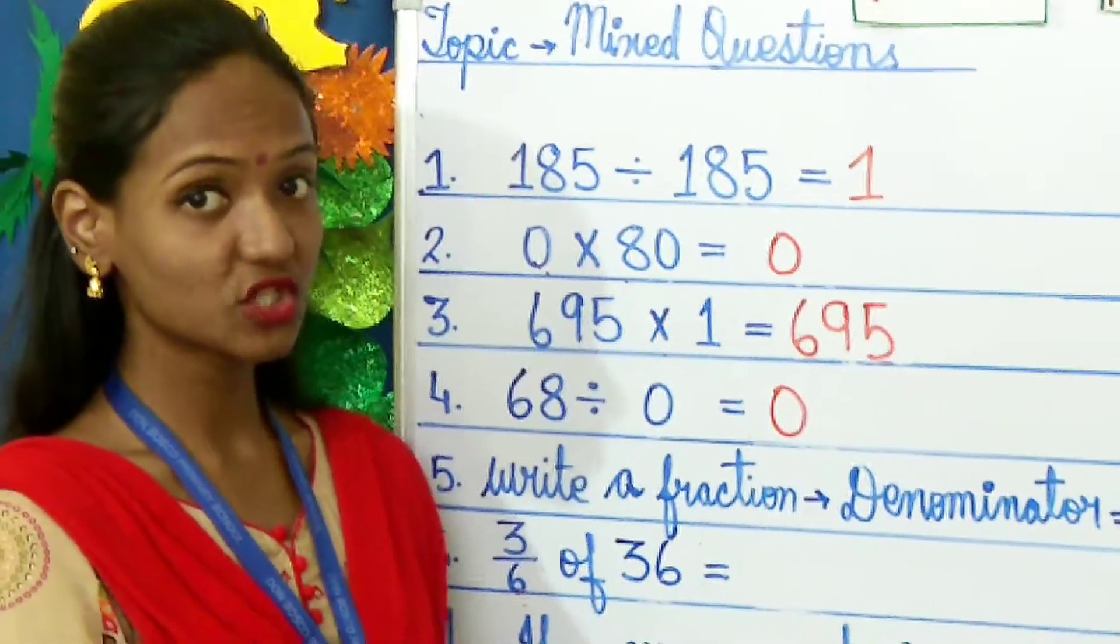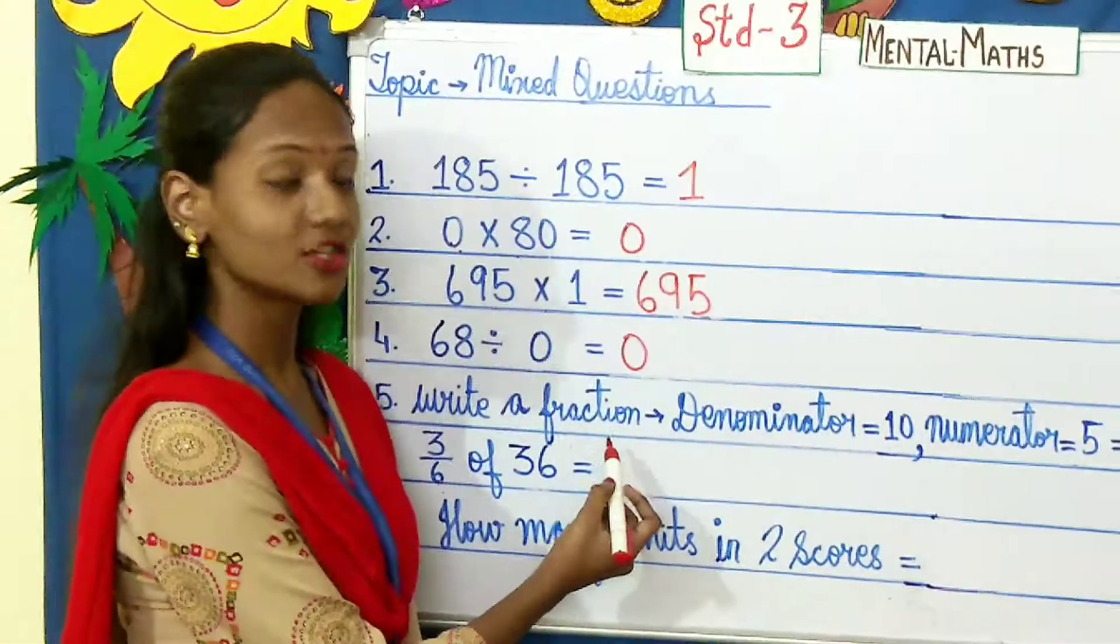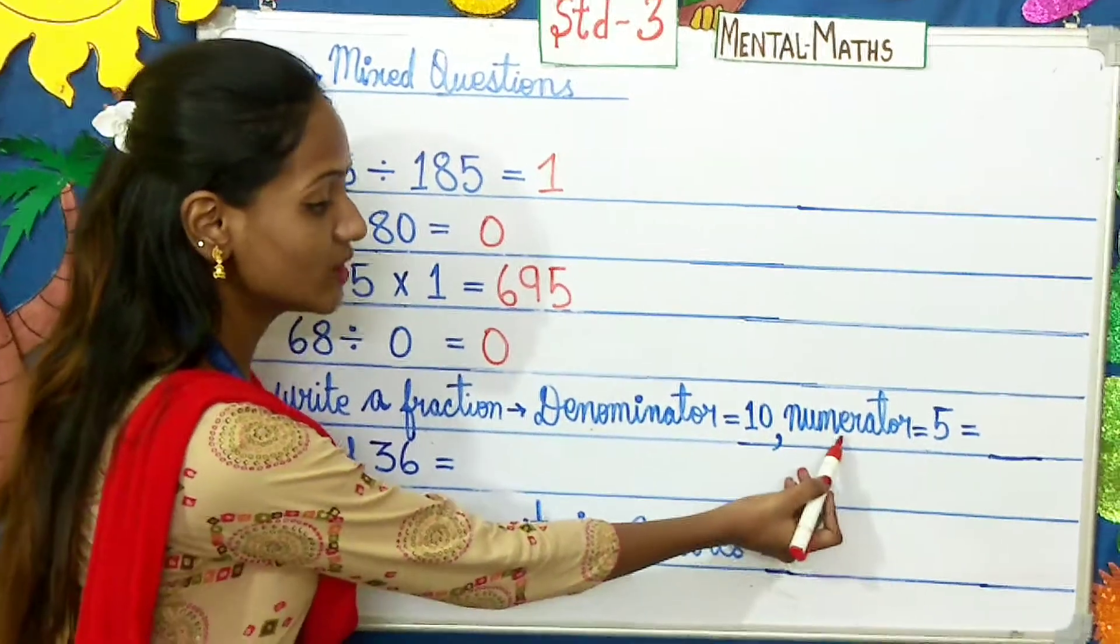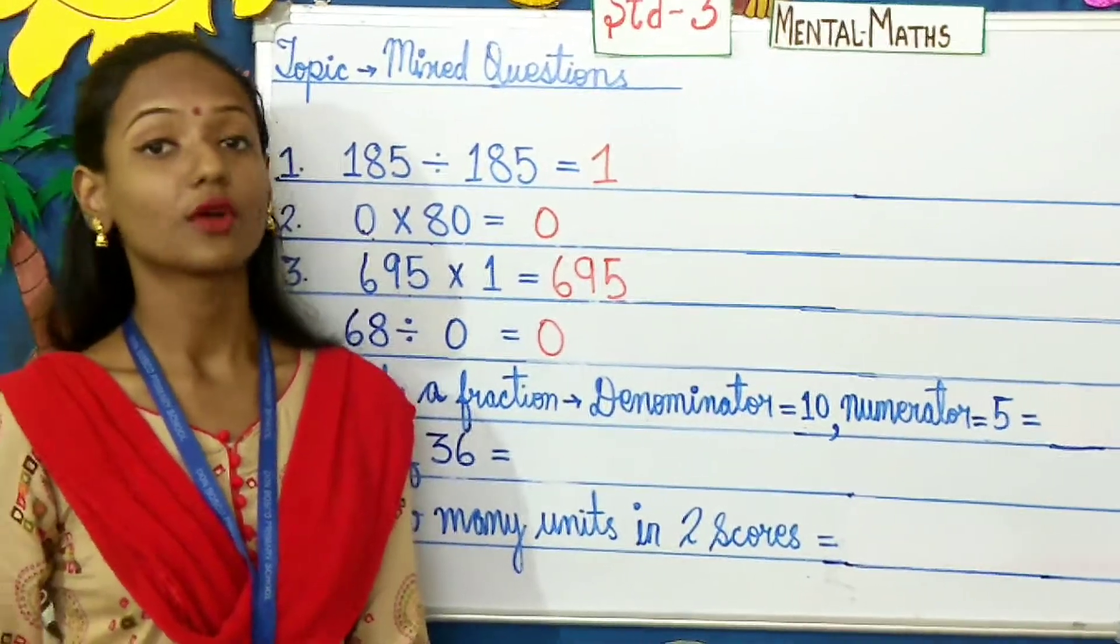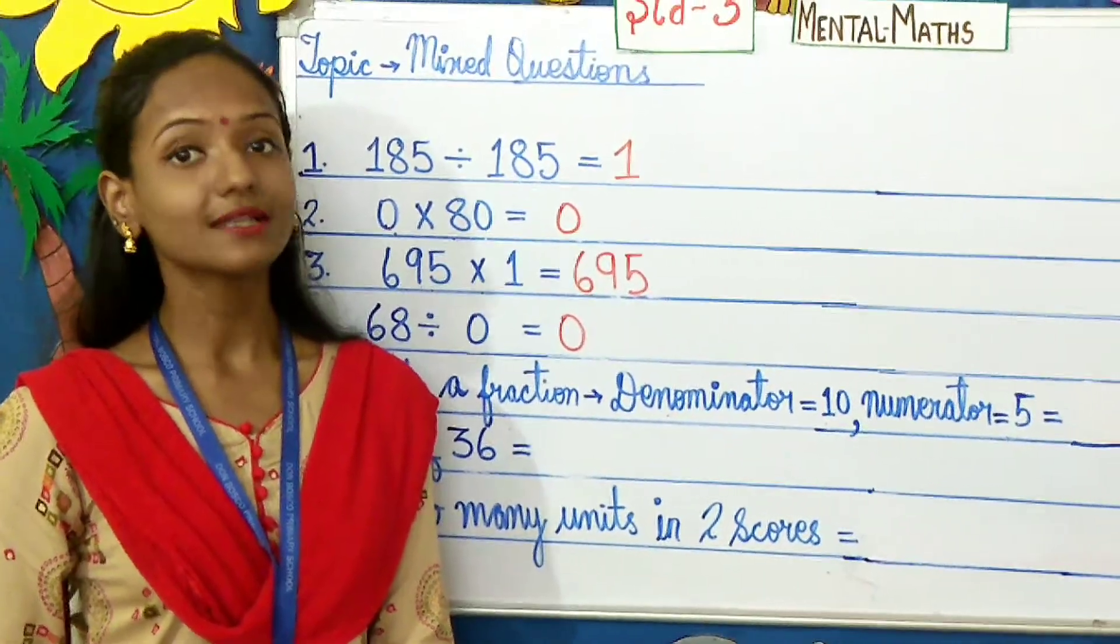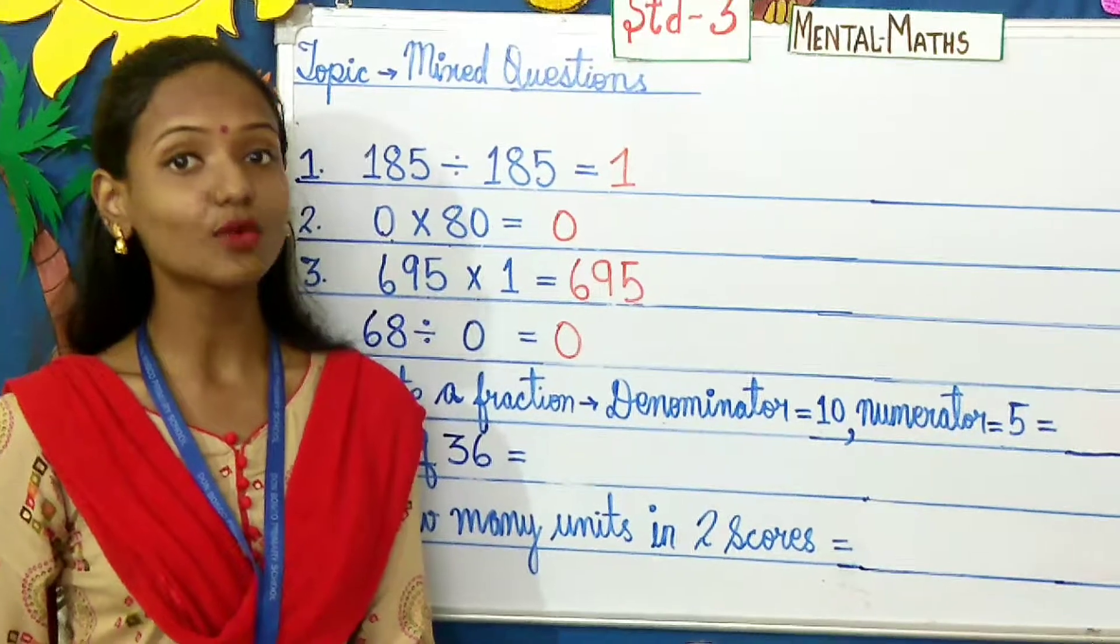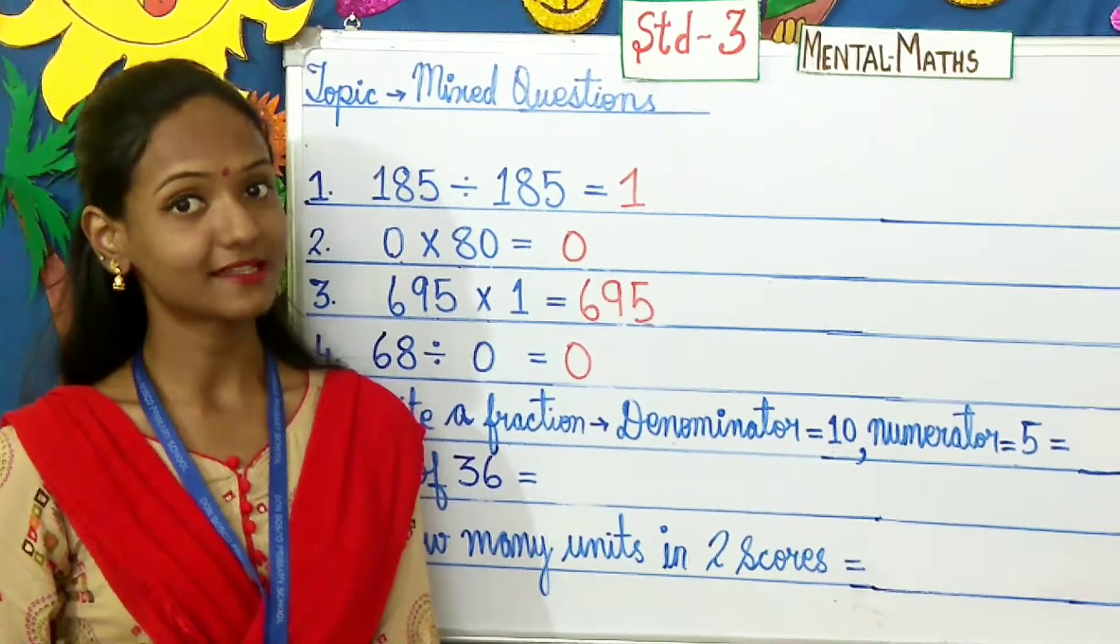What is fifth question here children? Write a fraction where the denominator is 10 and numerator is 5. Now, what is fraction? Fraction is a number that expresses equal parts of a whole object. Come let's see.